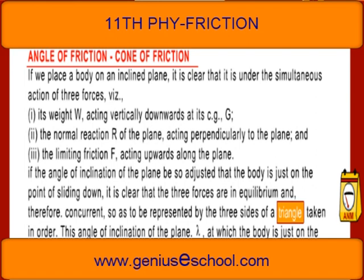Angle of Friction and Cone of Friction: If we place a body on an inclined plane, it is under the simultaneous action of three forces. First, its weight W acting vertically downwards at its centre of gravity G. Second, the normal reaction R of the plane acting perpendicularly to the plane. Third, the limiting friction F acting upwards along the plane. If the angle of inclination is adjusted so that the body is just on the point of sliding down, the three forces are in equilibrium and concurrent, represented by the three sides of a triangle taken in order.